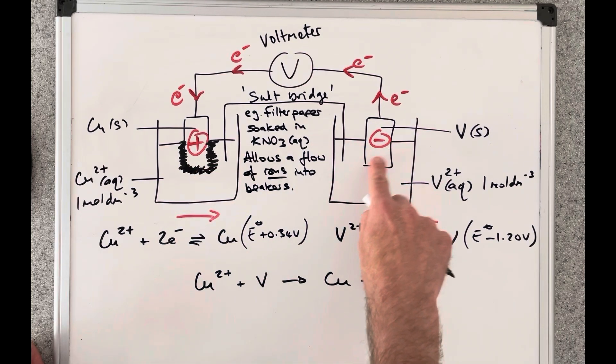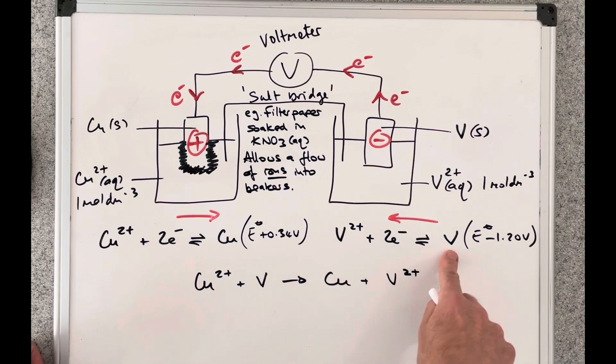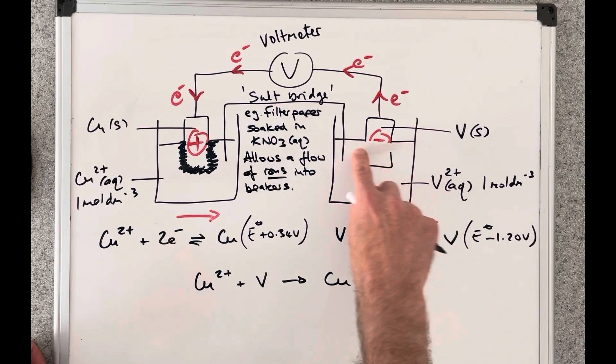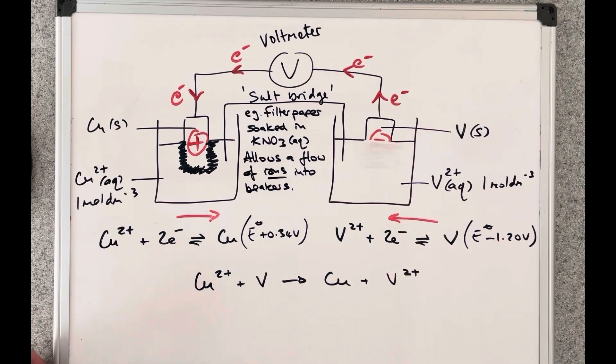And what's going to happen to this electrode. Well look the vanadium is disintegrating into V2 plus ions because it's having to give up its electrons. So eventually this is going to break off like that. And obviously the cell would stop working then because we've run out of reactants.